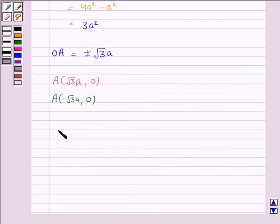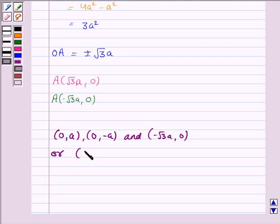Hence, the vertices of the triangle are (0, a), (0, -a), and (-root 3a, 0), or (0, a), (0, -a), and (root 3a, 0).